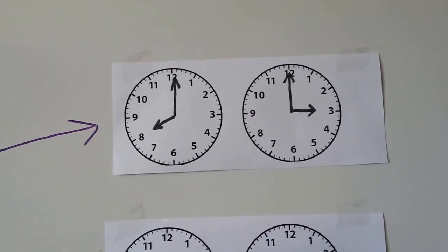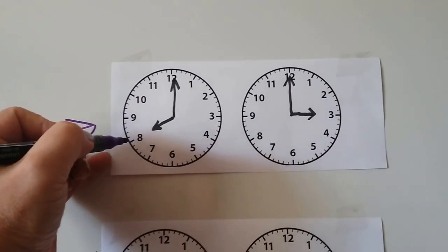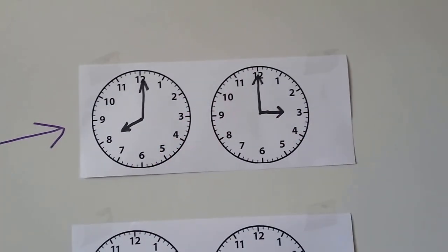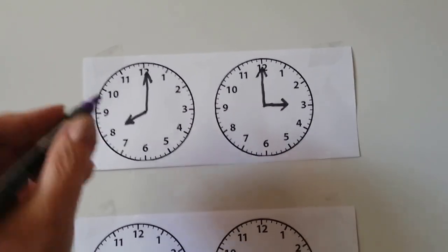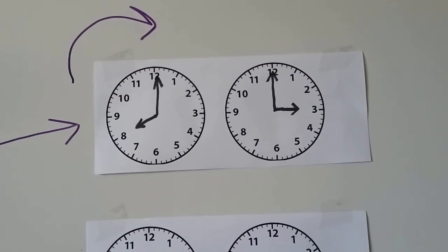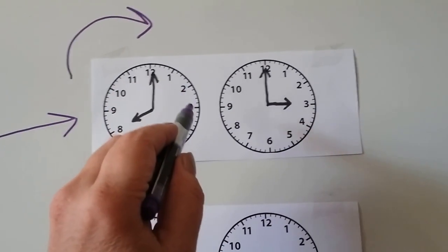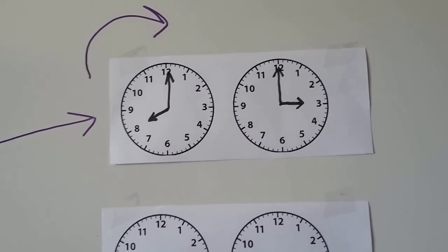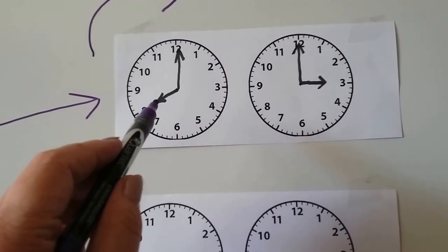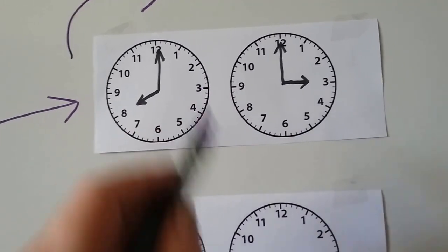Both minute hands are on the 12. So how many hours are going to pass from 8 o'clock to 3 o'clock? We know that it goes in this direction, doesn't it? That's called clockwise. So the hour hand is going to slowly move around this way until it gets to the 3. So let's count the hops it would take for this hour hand to get over here to the 3.